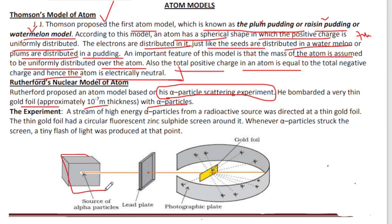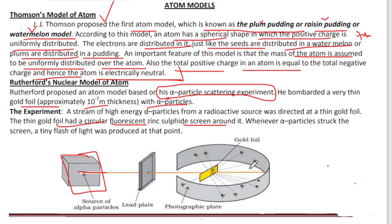The source of alpha particles is a very high energy radioactive source. The thin gold foil has a circular fluorescent zinc sulfide screen around it. Whenever an alpha particle struck this screen, a tiny flash of light was produced at that point.